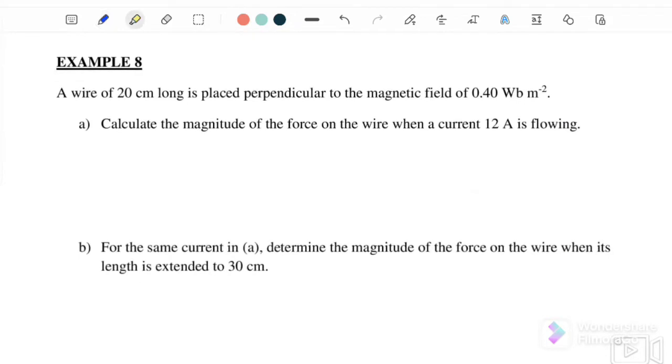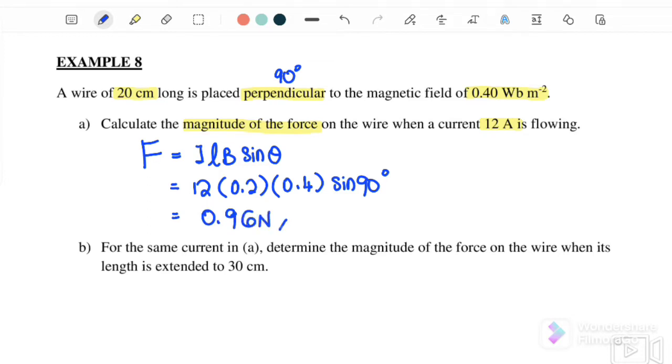Example 8. A wire of length 20 cm is placed perpendicular to the magnetic field of 0.40 weber per meter squared. Calculate the magnitude of the force on the wire when a current of 12 amperes is flowing. For this question, the equation is F equals ILB sine theta where the angle theta is between the length and vector B. We substitute: I is 12, length is 0.2 meters, B is 0.4, sine 90 degrees. So the magnetic force on this wire is equal to 0.96 N. We only give the magnitude.